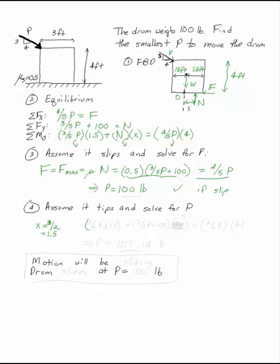I'm going to substitute that back into the sum of the moments: three-fifths of P times 1.5 plus three-fifths of P plus 100, that's N from the sum of the forces in y, times 1.5 equals four-fifths of P times 4. This solves to P equals 107.14 pounds.